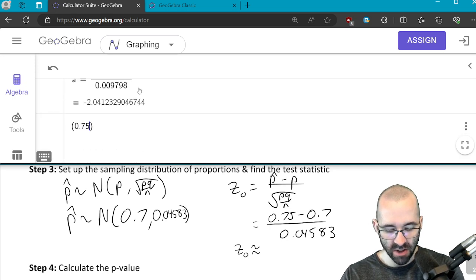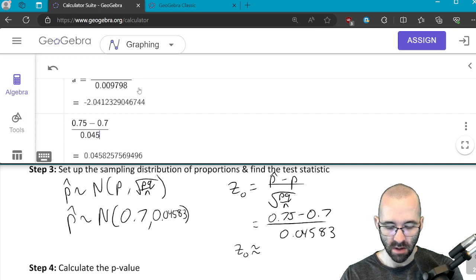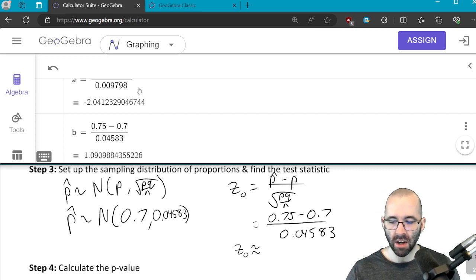Make sure to use parentheses. We'll get our test statistic is 1.0910.